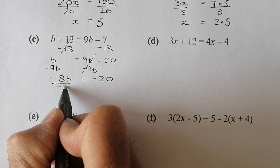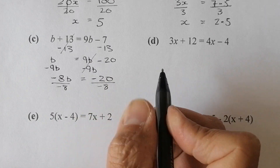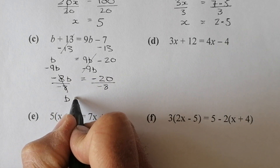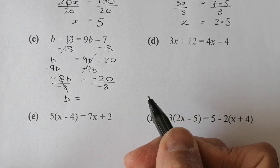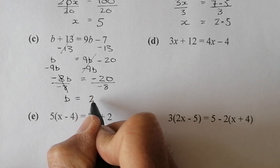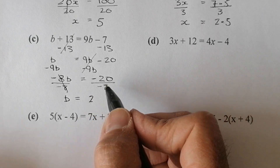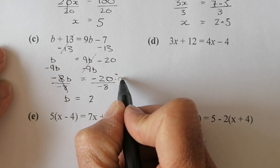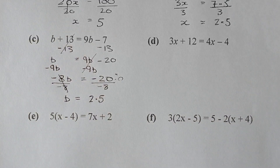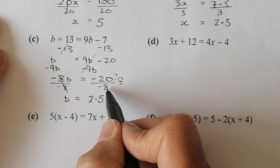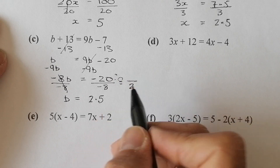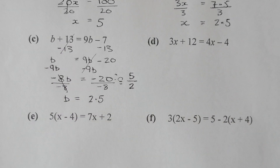I'm going to divide by the number in front of b, which is negative 8, dividing both sides. They cancel out, and I've got two negative signs so the answer will be positive. 8 into 20 gives 2 with a remainder — carrying over 4 gives 40, so that's 2.5. Alternatively, I can leave it as a top-heavy fraction: dividing top and bottom by 4 gives 5 over 2, which is probably a better answer. So b equals 5/2.